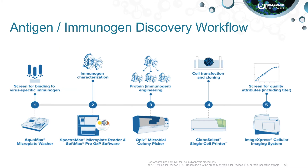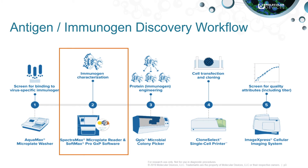The next step in the process involves immunogen characterization. Immunogenicity studies are conducted to determine whether the antigens identified in the previous step will initiate an immune response. Since phage display only screens for antigen-antibody binding, if the antigen evokes an immune response — often measured by an ELISA — the antigen, now considered an immunogen, will move forward in the process. Additional immunogen characterization is used to engineer desirable properties into the immunogen, and can be completed on Molecular Devices' best-in-class SpectraMax i-Series multimode plate readers, powered by SoftMax Pro GxP software.